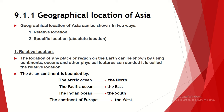Accordingly, let's see the relative location of the continent of Asia. The Asian continent is bounded by the Arctic Ocean from the north, the Pacific Ocean from the east, the Indian Ocean from the south, and the continent of Europe from the west.